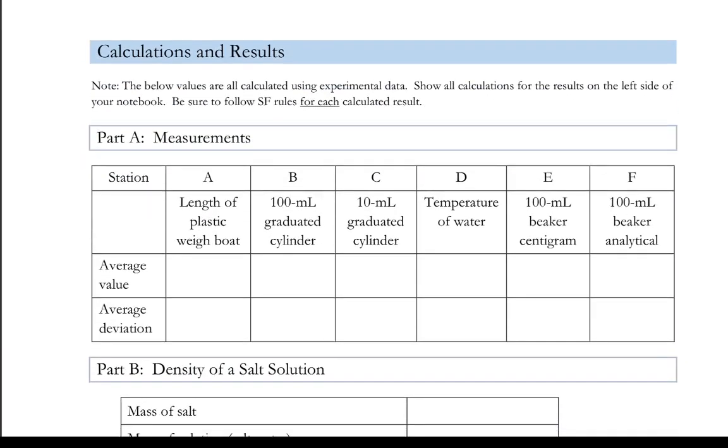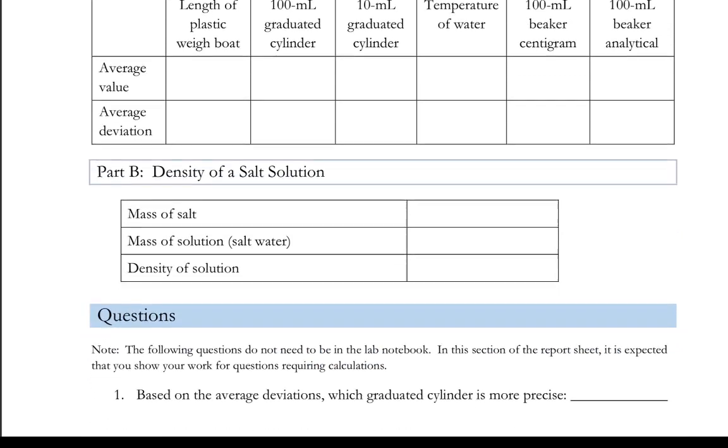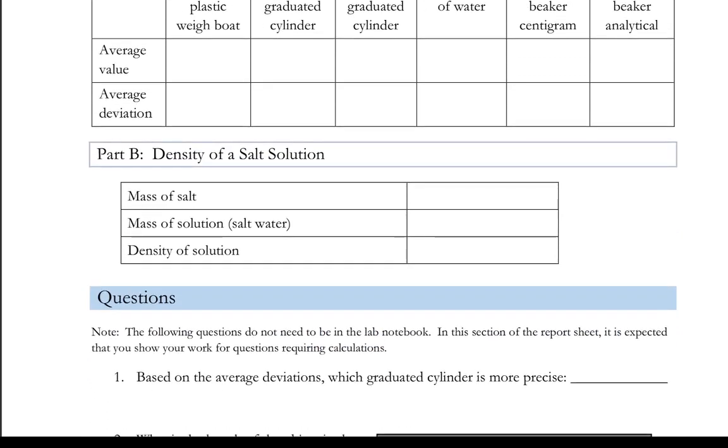Then we have the calculations and results. You can skip this first table because that relied upon having classmates data, which we have none of. But do Part B, the density of a salt solution. Do fill in that table.